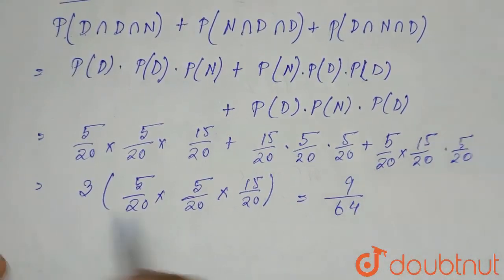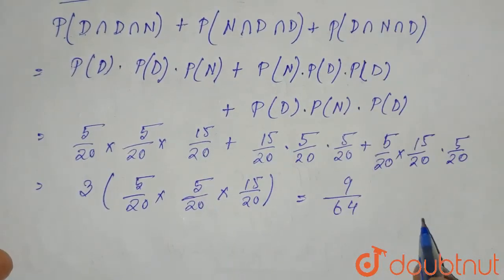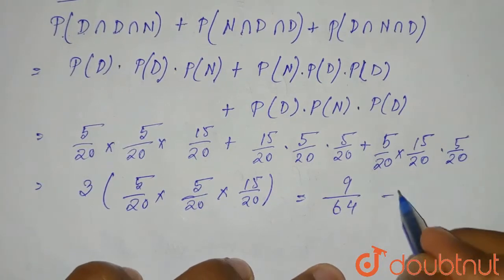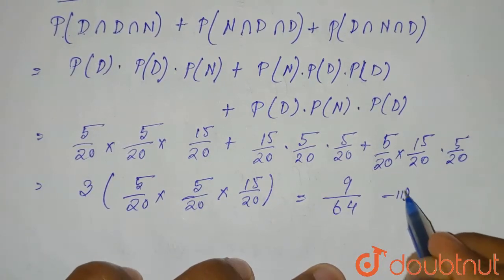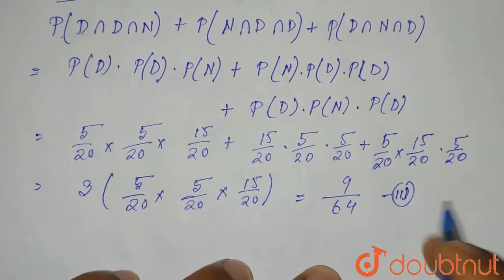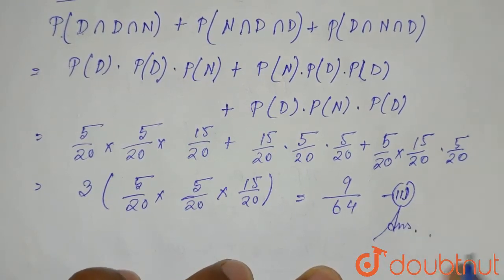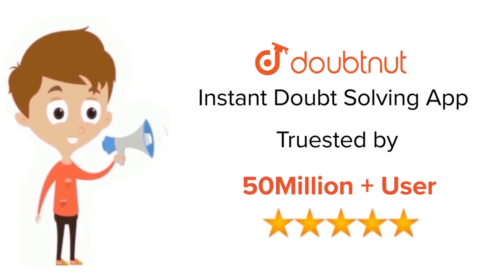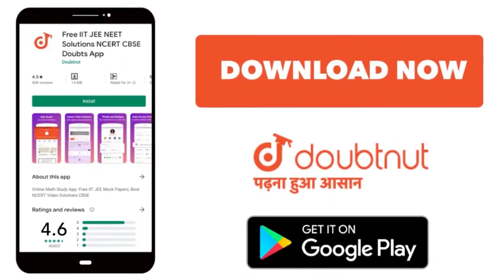So 9/64 is the required probability of getting two defective bulbs out of three. This corresponds to the third option. Thank you. For class 6 to 12, IIT JEE, and NEET level, trusted by more than 5 crore students — download the Doubtnut app today.